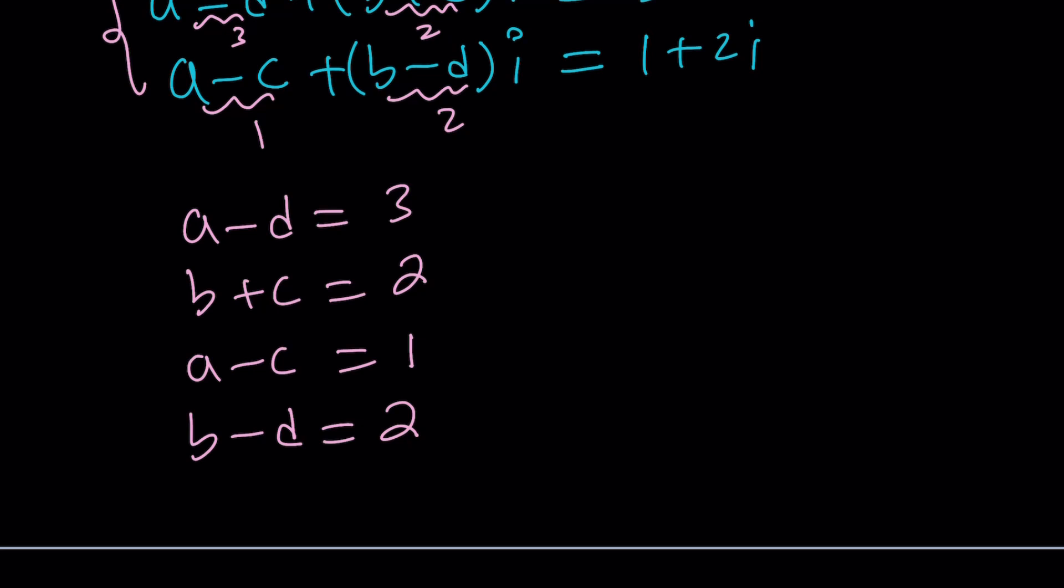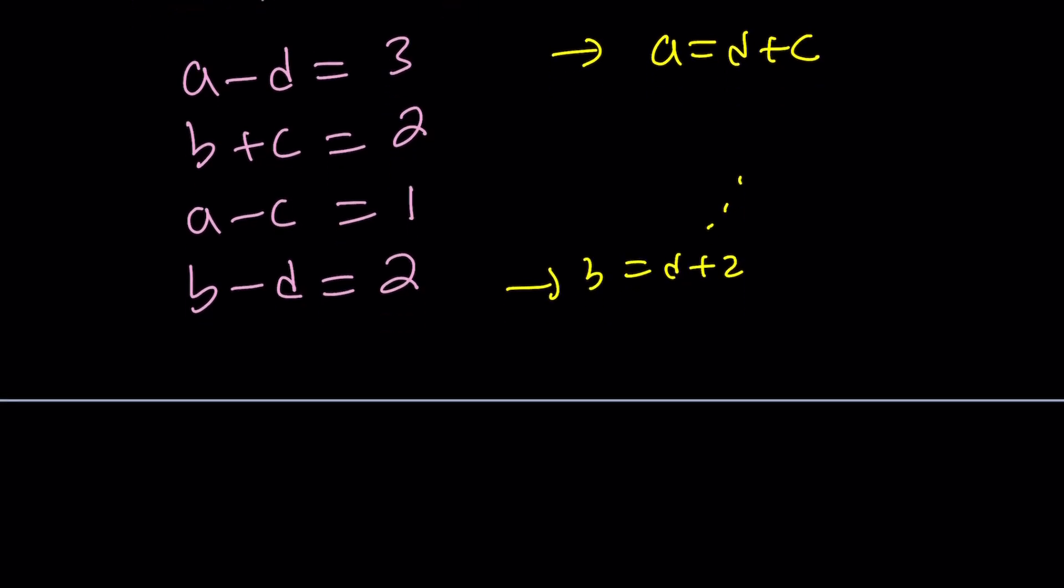Another way to do it is write everything in terms of one of the variables such as d, maybe. So, you can kind of go off of d like a equals d plus 3. And you can do the same thing for b, like b equals d plus 2, so on and so forth. Let me go ahead and proceed with the other method that I just talked about.